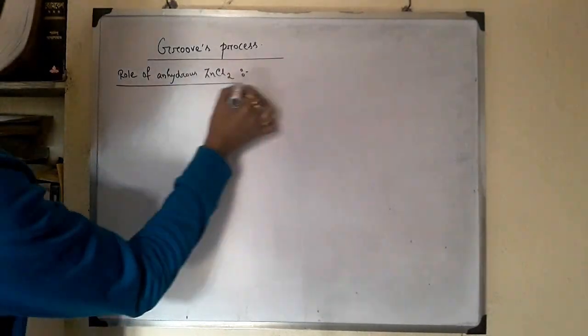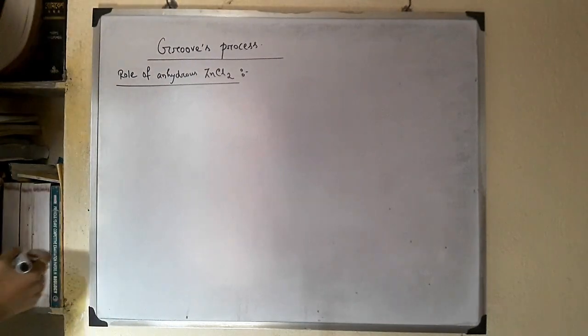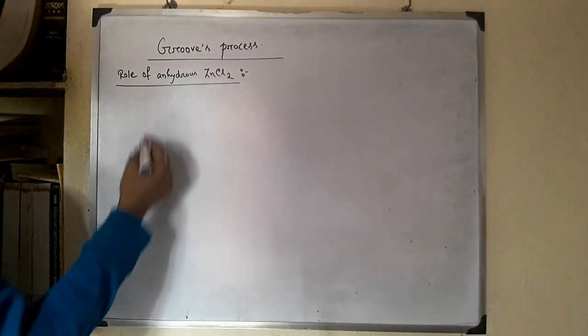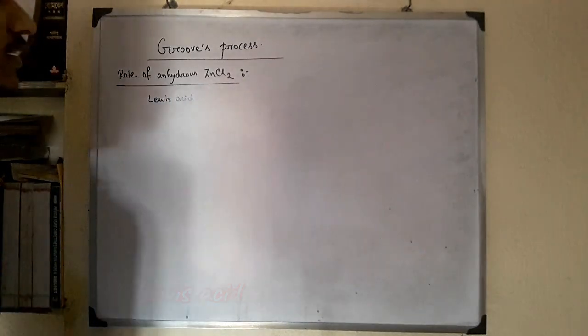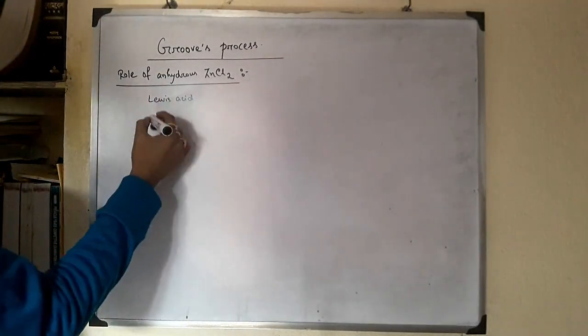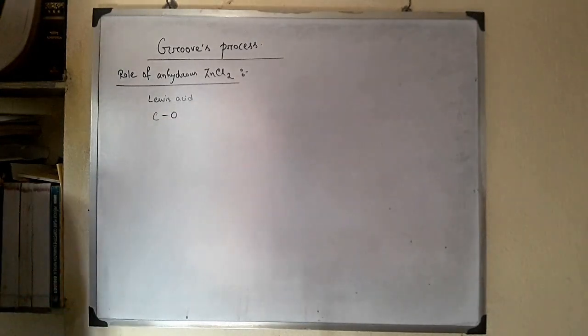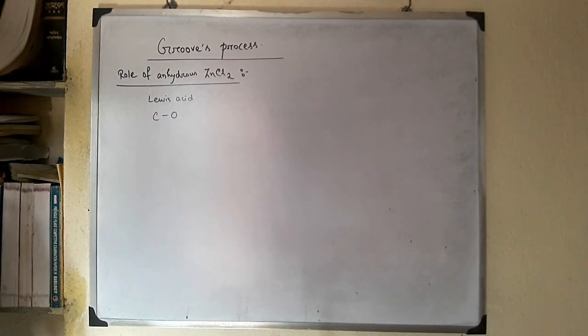The role of anhydrous ZnCl2: this anhydrous ZnCl2 acts as a Lewis acid and helps to cleave the carbon-oxygen bond.